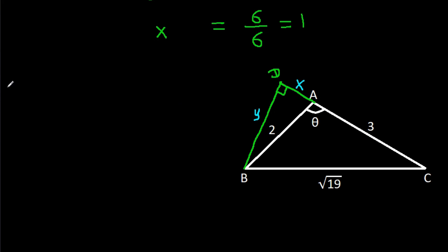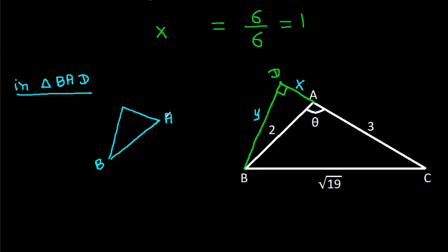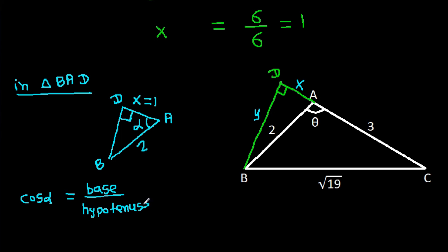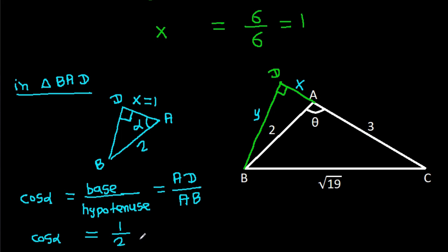And now in triangle BAD, AD is X which is 1, AB is 2, and the angle at D is 90 degrees. Suppose this angle at A is alpha. Then cos alpha equals base over hypotenuse, which is AD over AB, so cos alpha equals 1 over 2, meaning alpha equals 60 degrees.